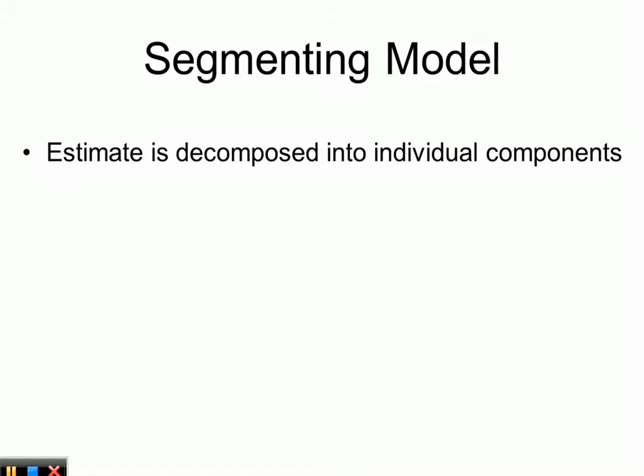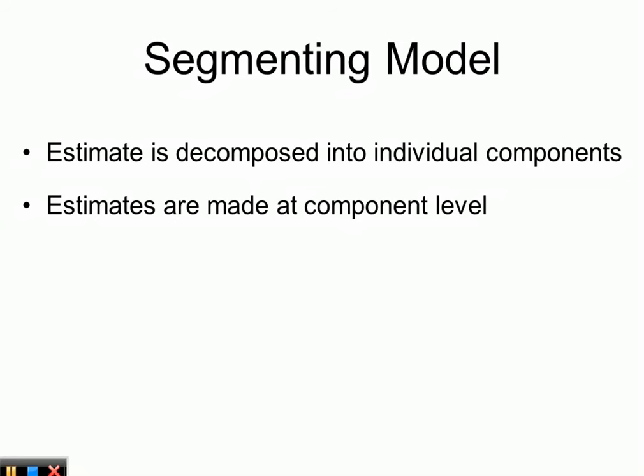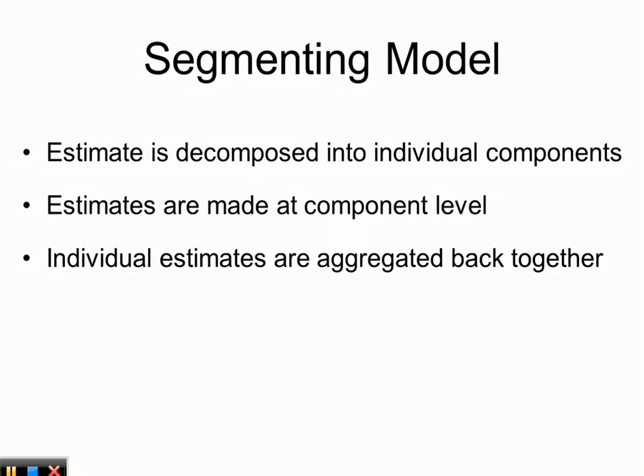The segmented model is used to estimate something that can be decomposed into individual components, for example parts of equipment. If we're building something, we can estimate each part separately and then add them up to a total cost. Estimates are made at the component level and individual estimates are then aggregated — basically summed up — similar to how we summed subtotals in the per-unit model.